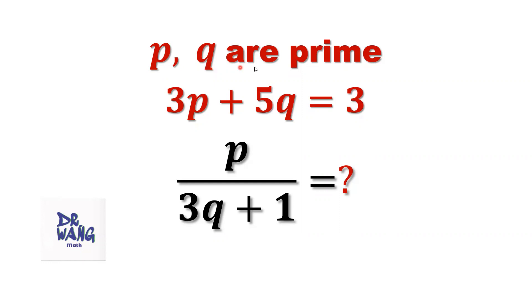P and Q are prime numbers. 3 times P plus 5 times Q equals 31. P divided by 3 times Q plus 1 equals what? This is the question.